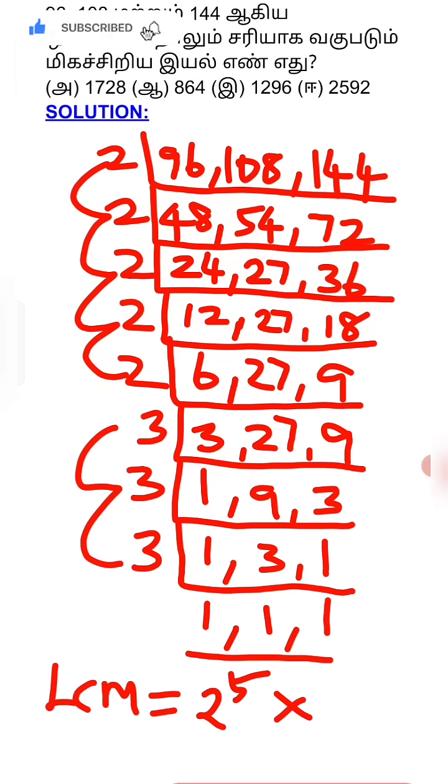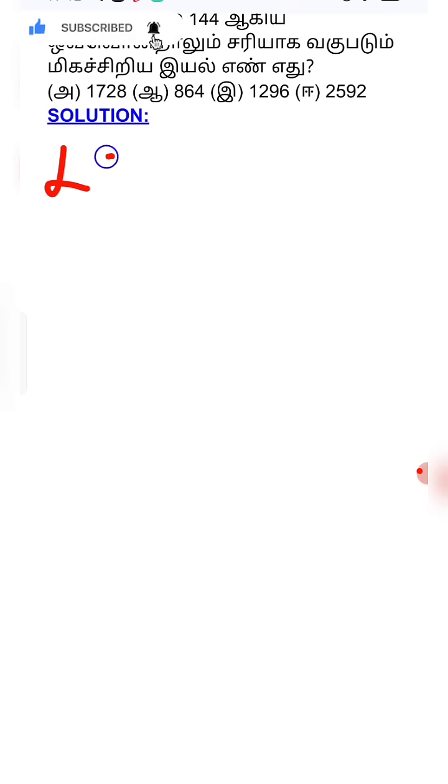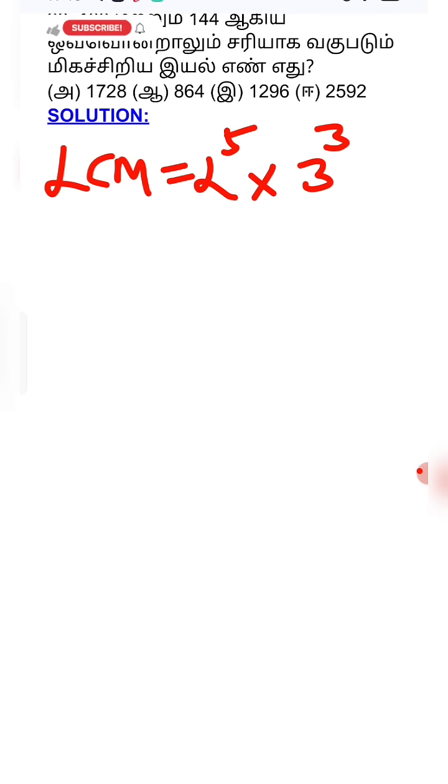3 comes 3 times. So 2 to the power 5, and 3 comes 3 times, so 3 cube. 2 to the power 5 is 32. 3 cube is 27. 3 times 3 is 9, 9 times 3 is 27.